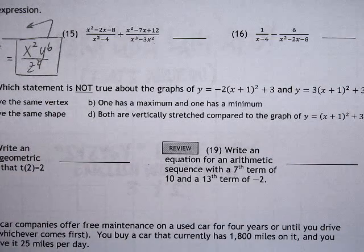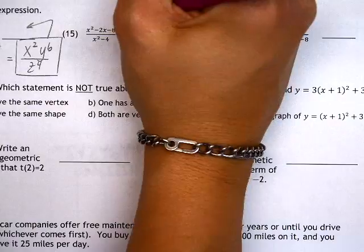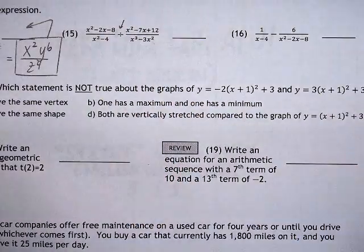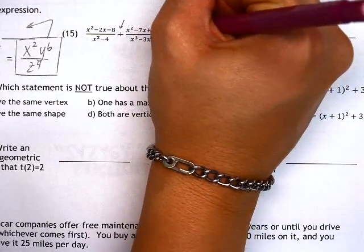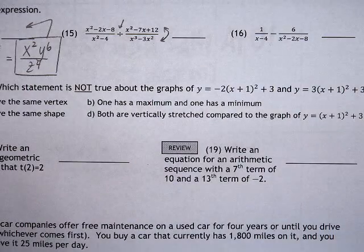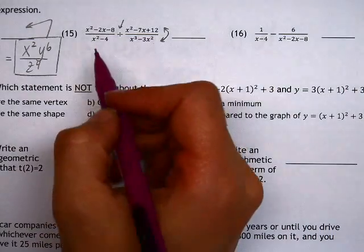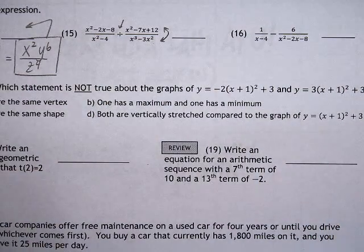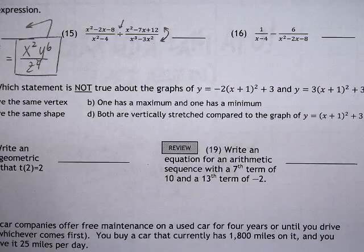Number 15 has a lot of factoring to accomplish and we also have to notice the fact that it's a division. Division implies that on the second fraction we're going to flip it or take its reciprocal. What we're going to do is just factor as we go and we'll flip as we go so we don't have to write down quite so much.